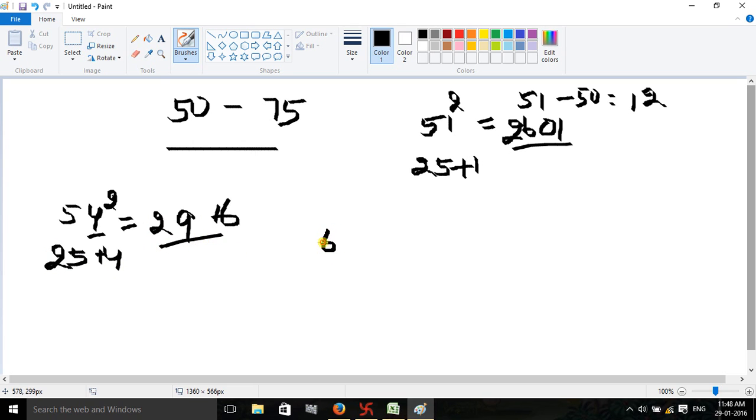For 61 squared: 61 is 11 more than 50. 61 minus 50 equals 11. 11 squared equals 121. Write 21 and 1 is your carry forward. Now add 25 plus 11, which equals 36. Then 36 plus the carry of 1 equals 37. So 61 squared equals 3721.